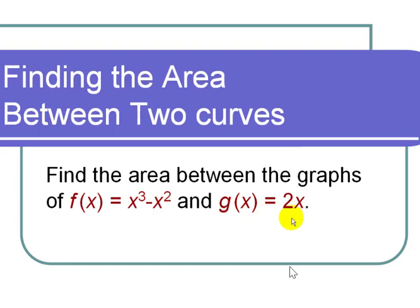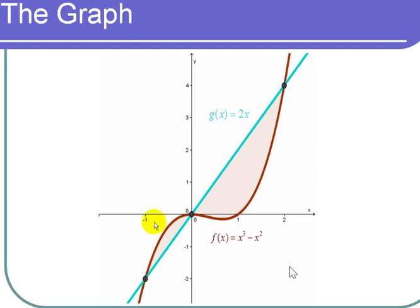Our strategy is going to be first graph it, and I'm going to use a graphing calculator. You could also do this by hand if you need to. When I graph it, g(x) = 2x is the line, and f(x) = x³ - x² is this cubic curve.